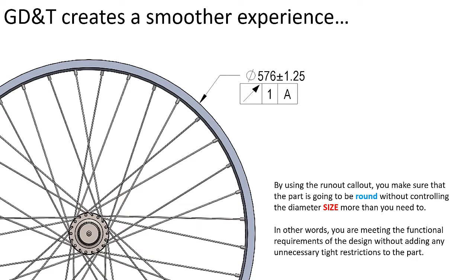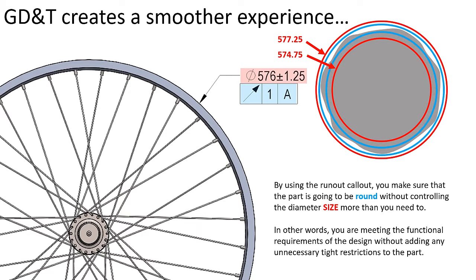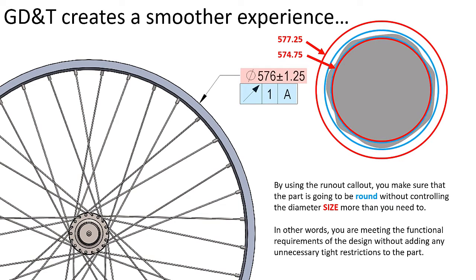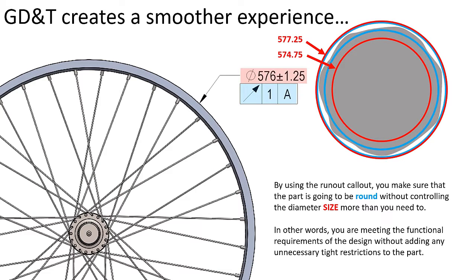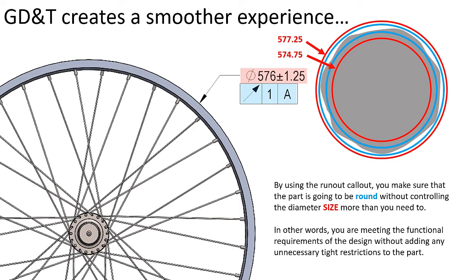Instead, we recommend the use of GD&T — more specifically, the runout symbol. This control restricts runout of the diameter to a maximum radial deviation with respect to a datum axis. The datum feature in this case will be the axle of the rim assembly, and runout will only control the radial deviation, not the size of the diameter. The diameter of the rim can then be opened and optimized to give manufacturing more tolerance to work with. Utilizing GD&T not only gave us more tolerance to work with but also focused on the exact functional requirements of the rim — giving the most tolerance back to manufacturing where it matters, in this case form, not size.